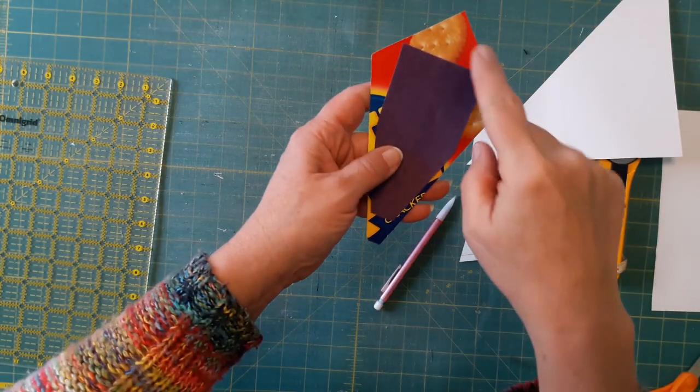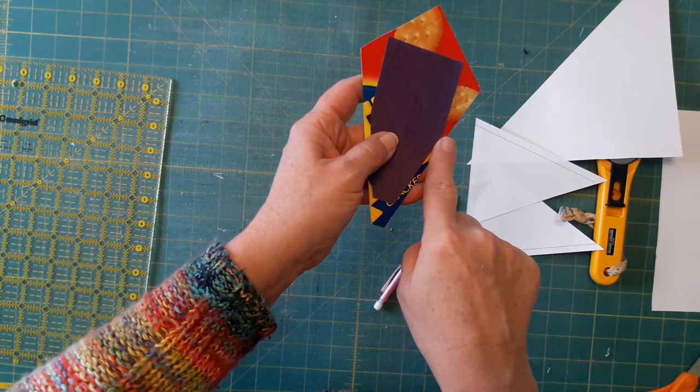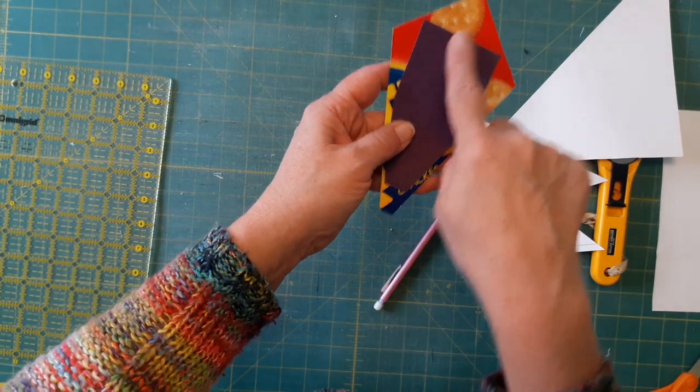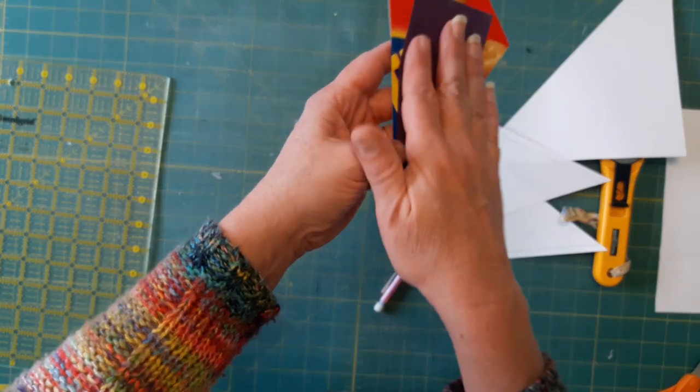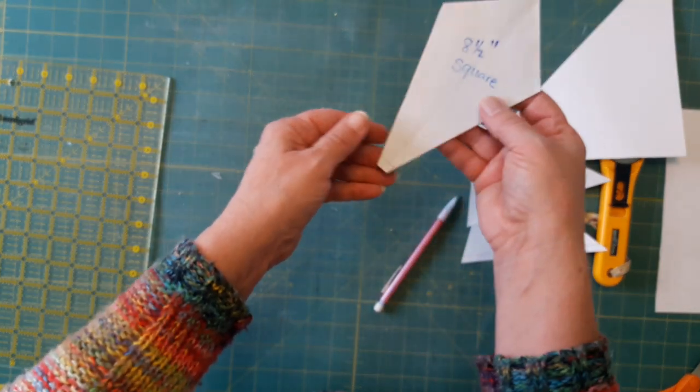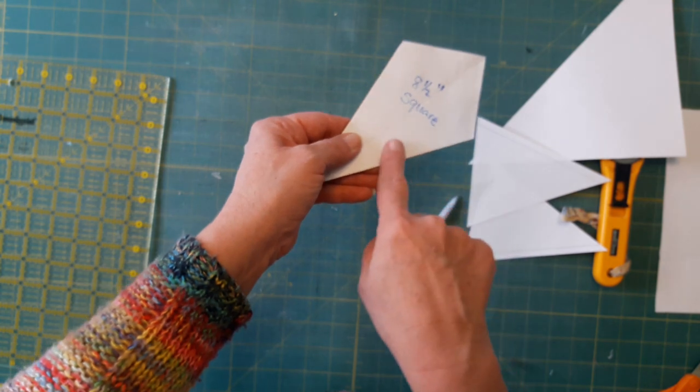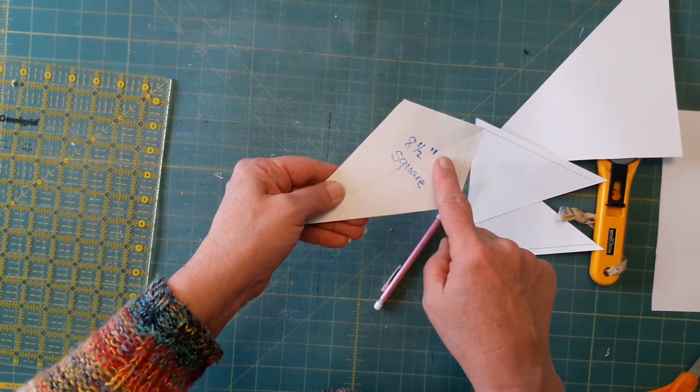Then I mount mine to lightweight cardboard like a cereal box or a cracker box. And I put some sandpaper that I glue on there. That just helps when I'm putting it on the fabric it doesn't slip. I also wrote on here 8 1/2 inch square.